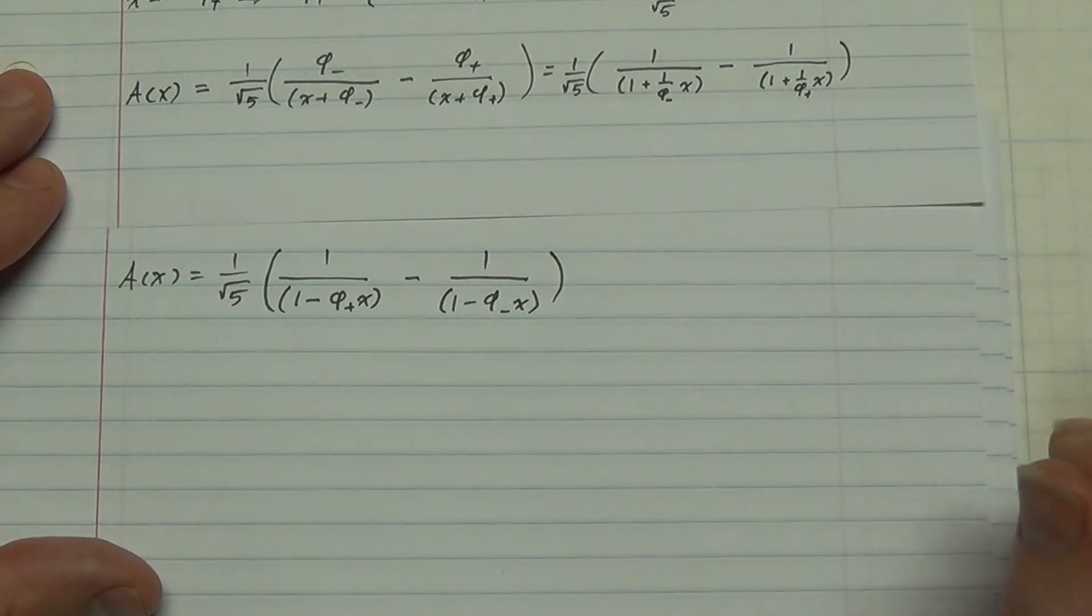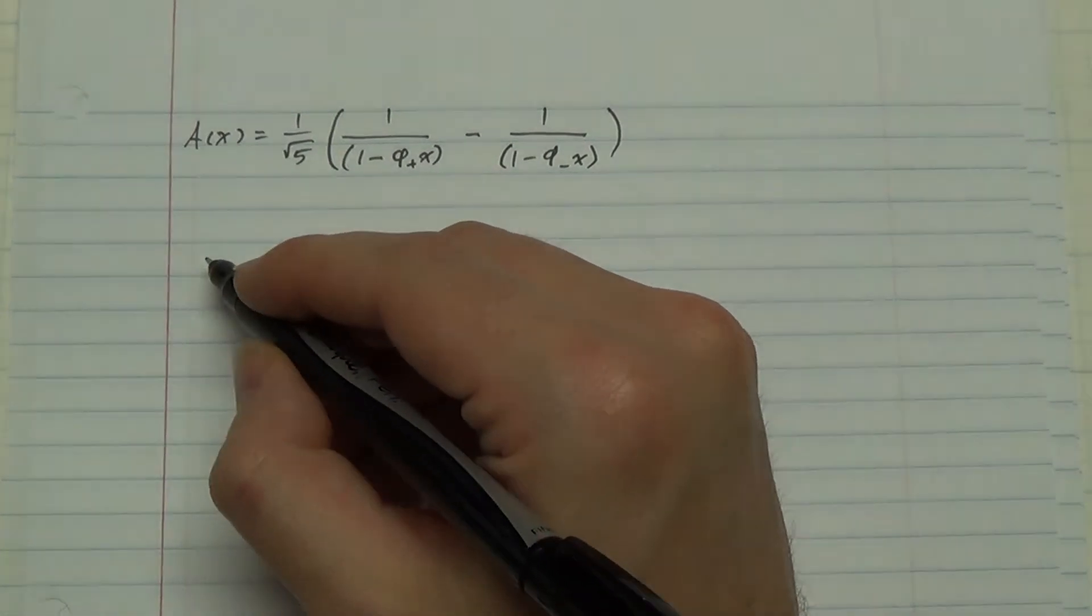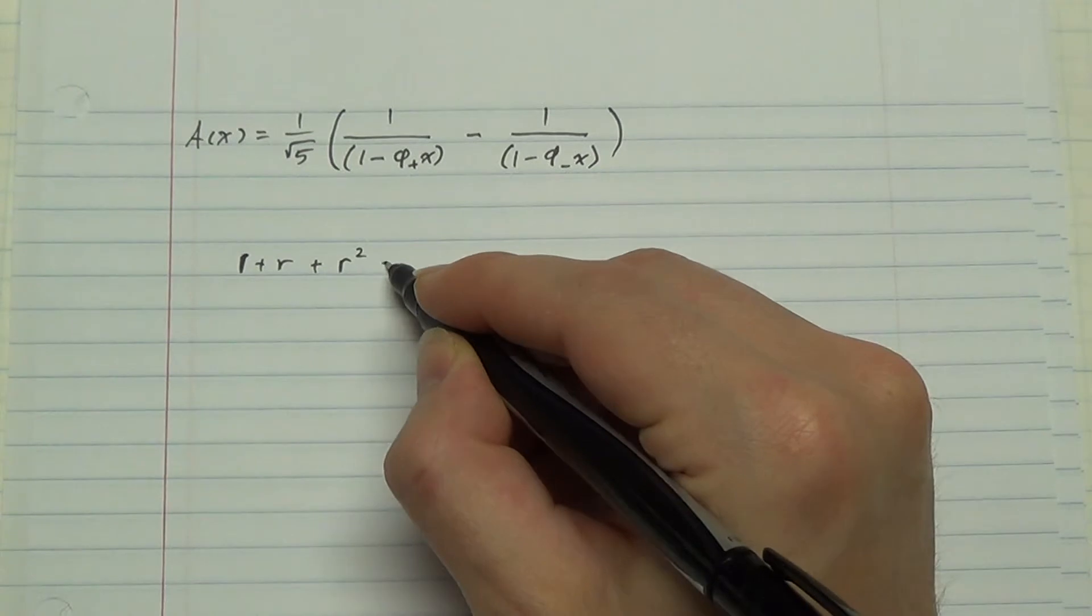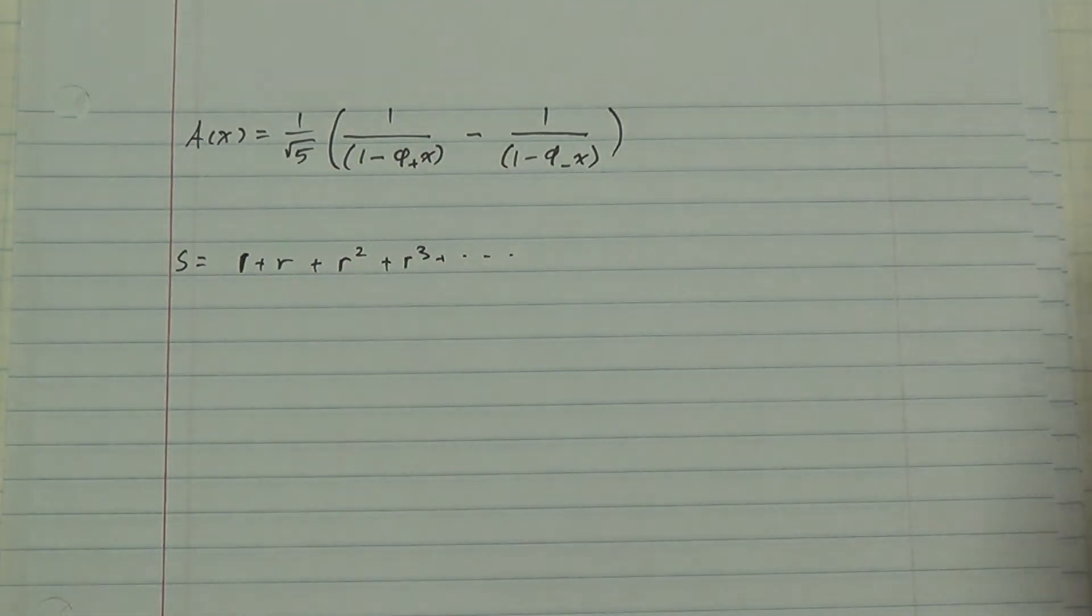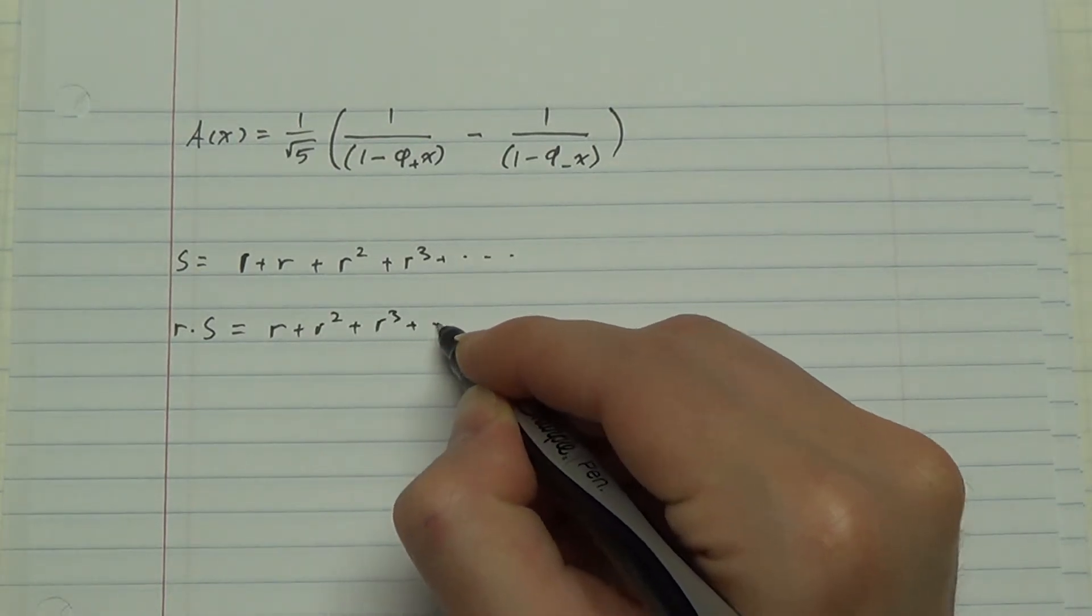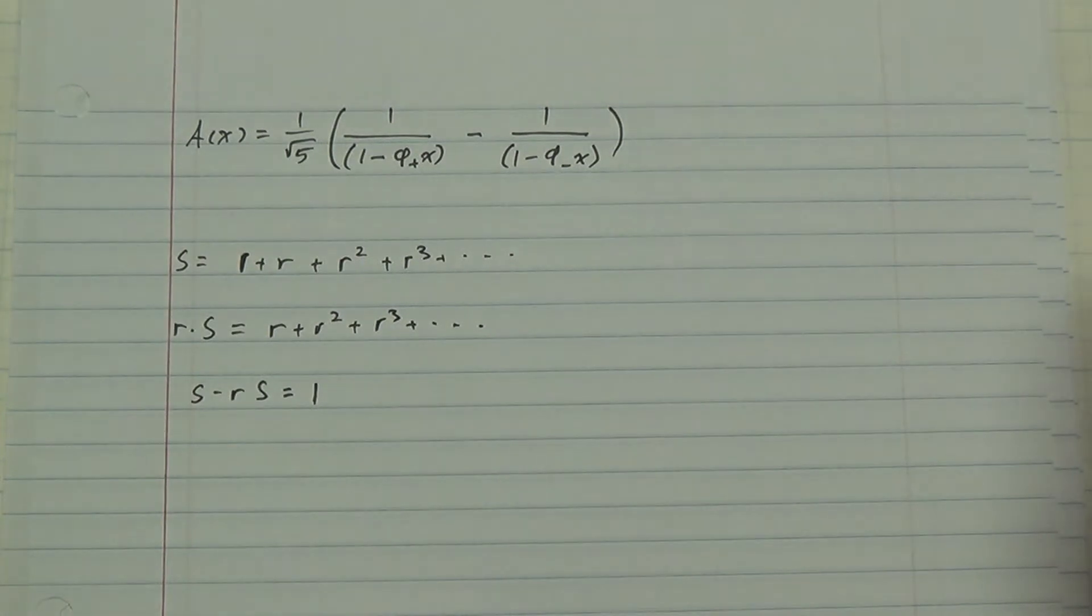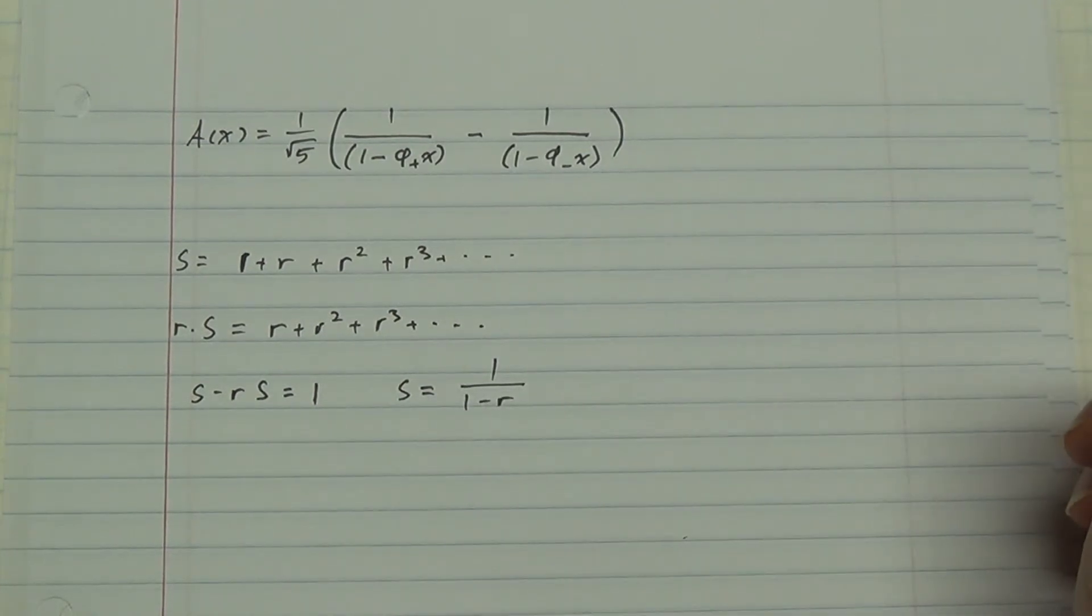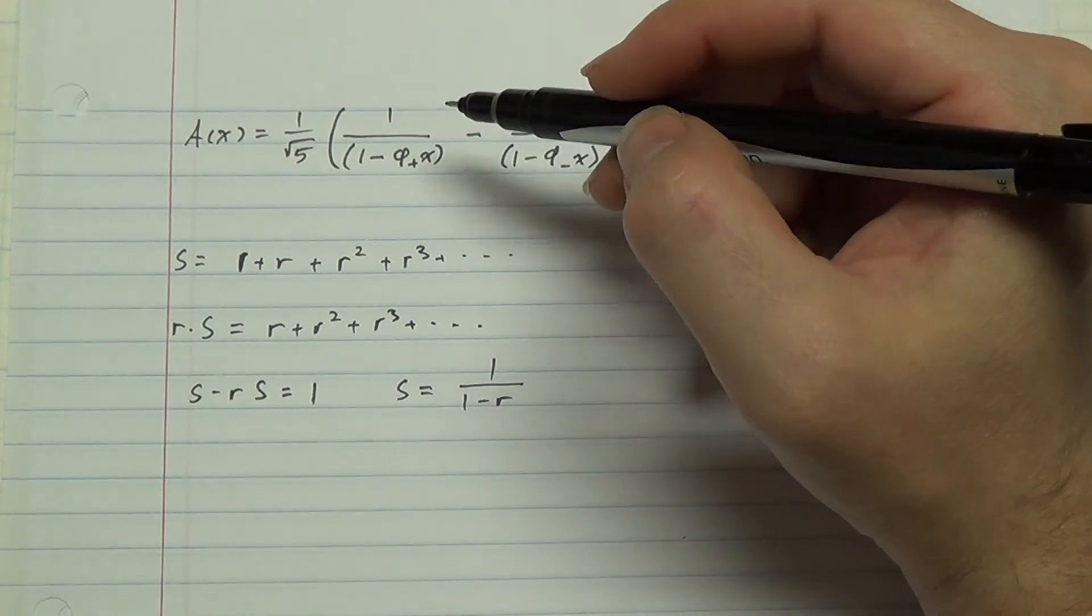And we're almost there. Do these suggest anything to you? Well, if you've worked with series a lot, it might. Take, for example, a geometric series: 1 plus r plus r squared plus r cubed and so on. Let's call the sum of that, assuming it has one, S. Consider r times S, r plus r squared plus r cubed and so on, and subtract the two. So S looks like 1 over 1 minus r. Well, this looks like that. This is a series with common ratio phi plus x.